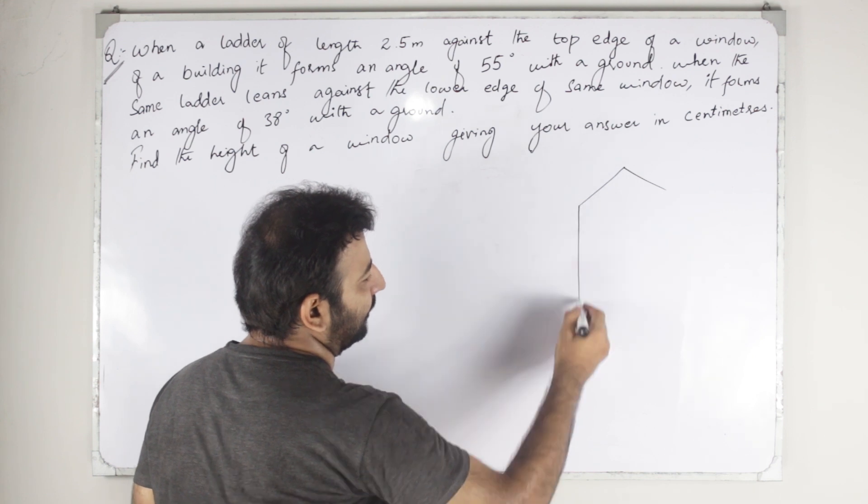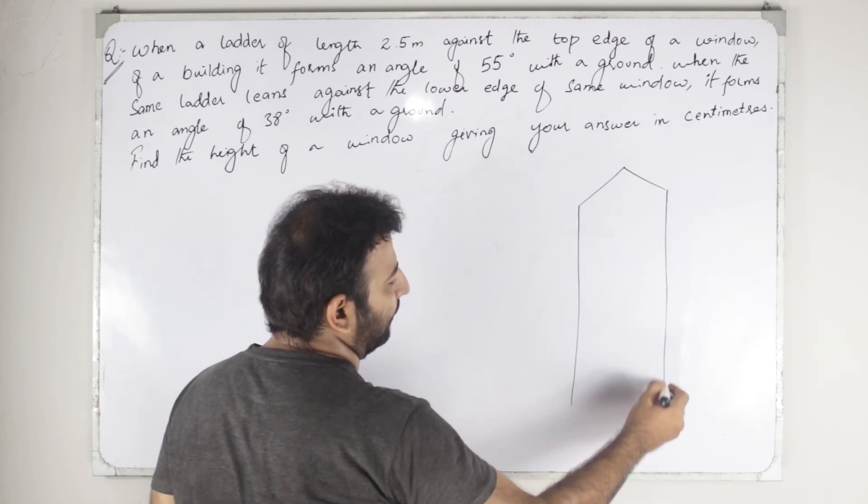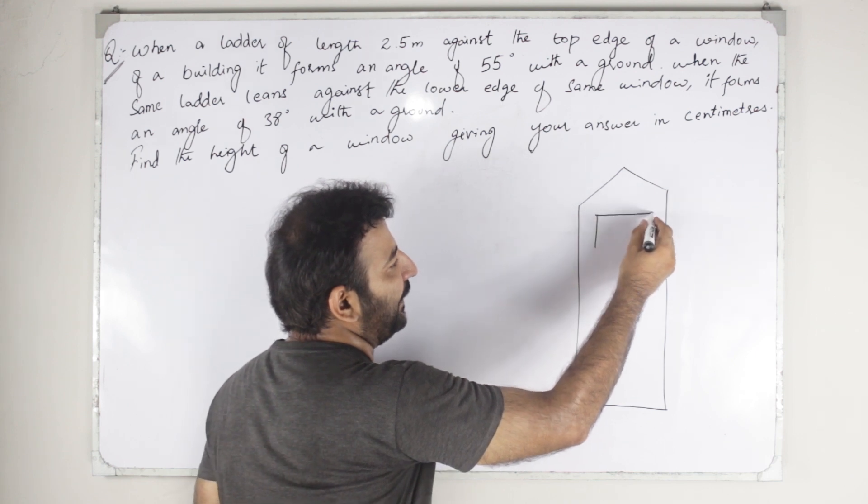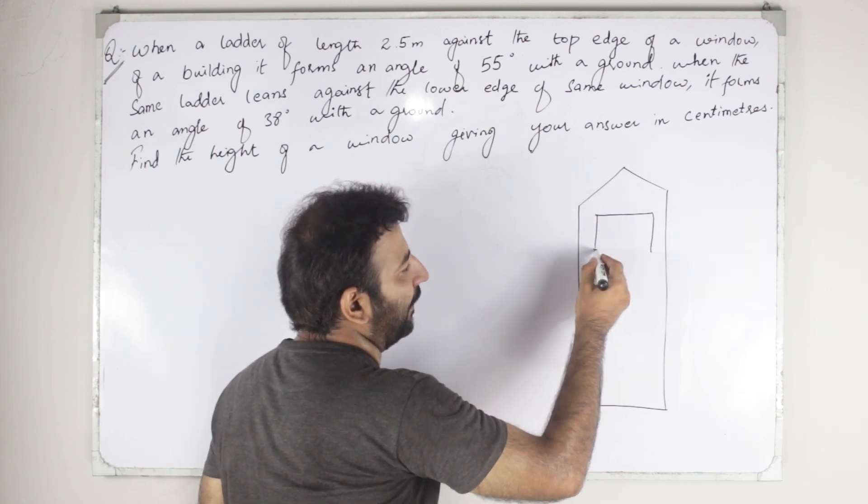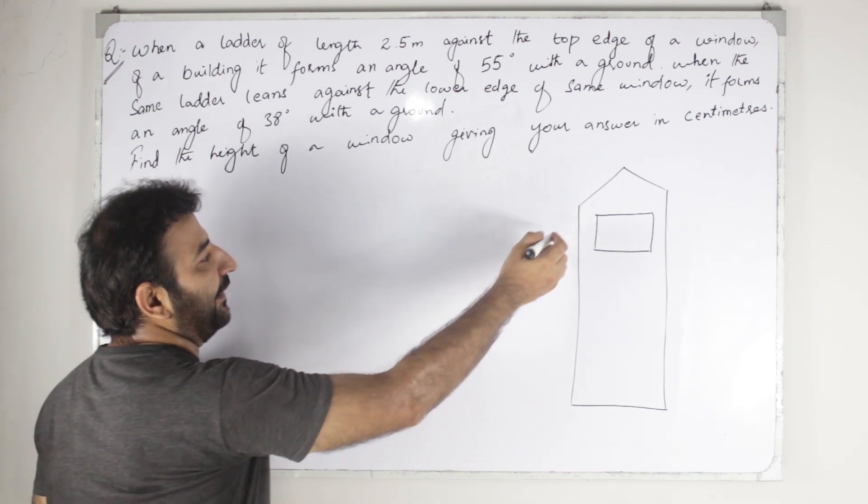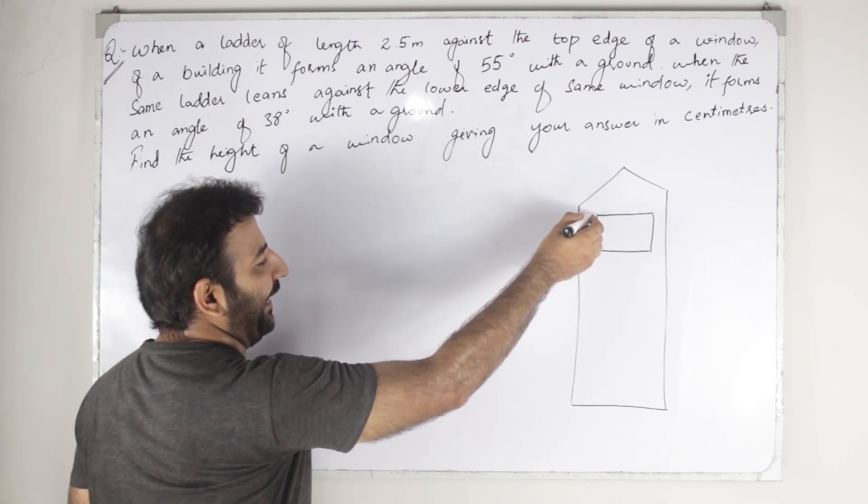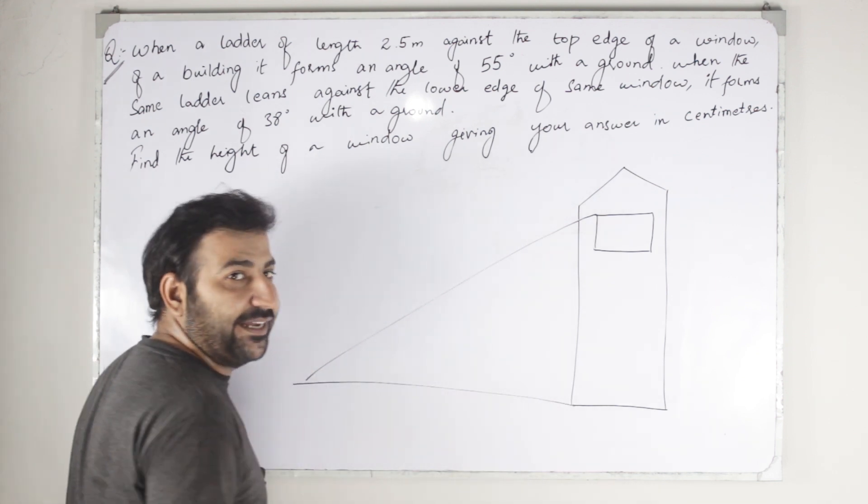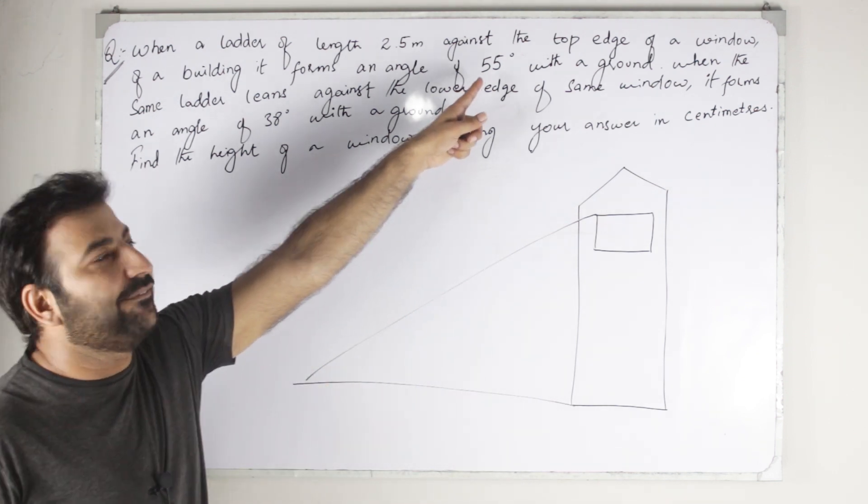So here is a building, you can see. The ladder is placed at the top edge of a building and it forms with the ground a 55 degree angle.